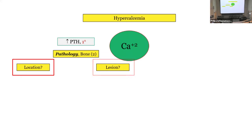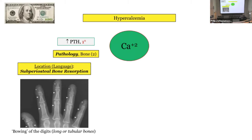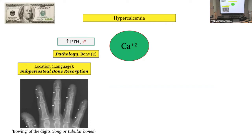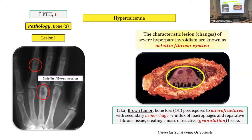For primary hyperparathyroidism there are two bone pathologies. The first involves location: subperiosteal bone resorption. For some reason PTH preferentially absorbs bone in the subperiosteal location of long tubular bones. The language will either describe subperiosteal bone resorption or, more commonly, 'bowing of the digits' — the tubular bone looks somewhat bowed on X-ray.